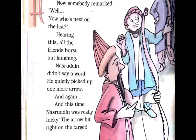Now somebody remarked, 'Well, now who is next on the list?' — ab aapki list mein doosra kaun hai. Hearing this, all the friends burst out laughing. Nasruddin did not say a word. He quietly picked up one more arrow — aur is baar Nasruddin really lucky the.